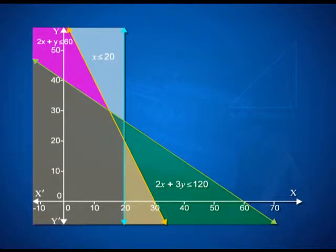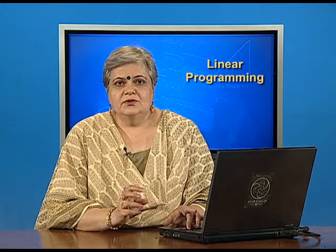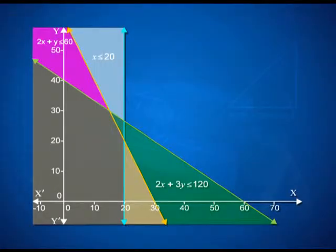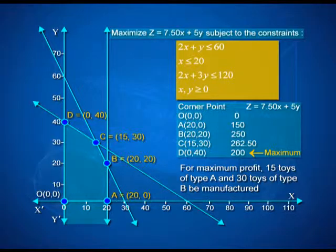The common feasible region is where all three inequalities intersect. At the same time, I also have to consider the non-negative restrictions — x and y both greater than or equal to 0 — therefore the common feasible solution region is restricted to the first quadrant. So here we have a bounded region which represents the feasible solution for the problem with constraints 2x plus y less than or equal to 60, x less than or equal to 20, 2x plus 3y less than or equal to 120, and x, y greater than or equal to 0. As shown in the figure, the shaded region is the feasible region.